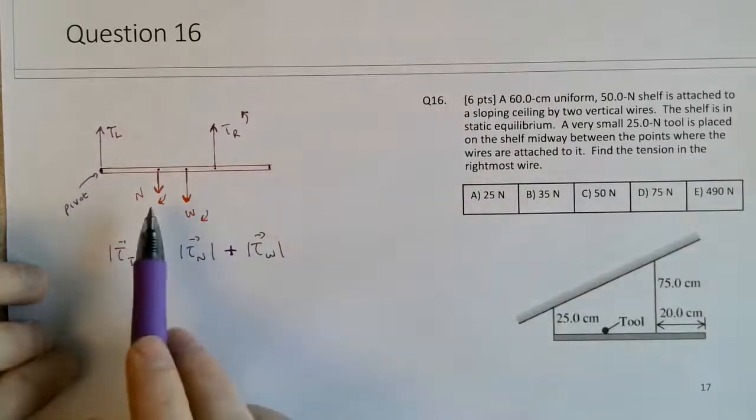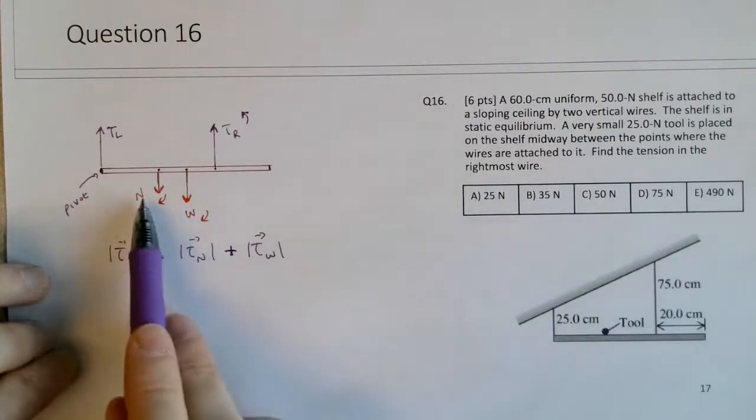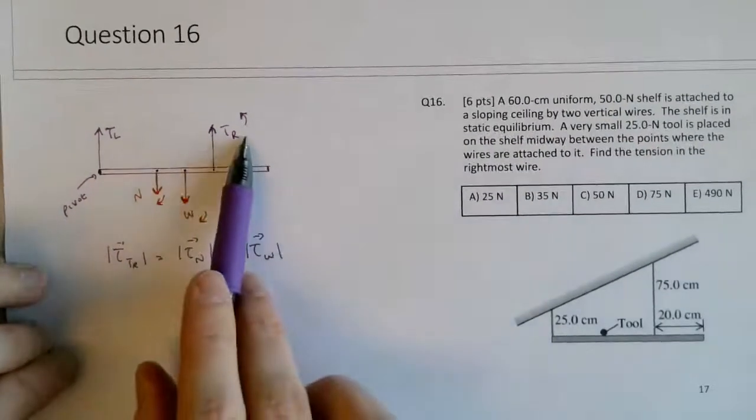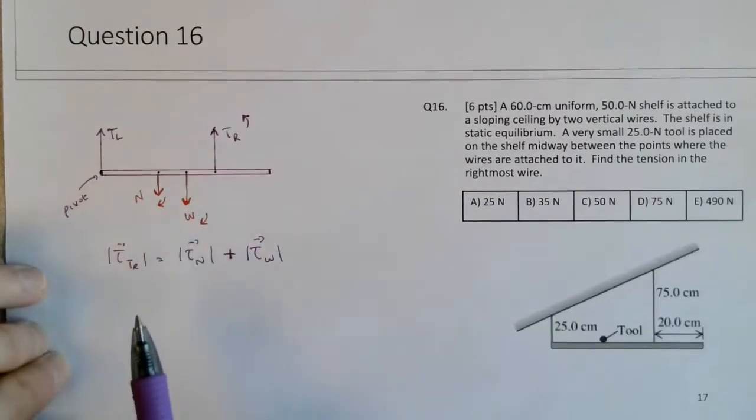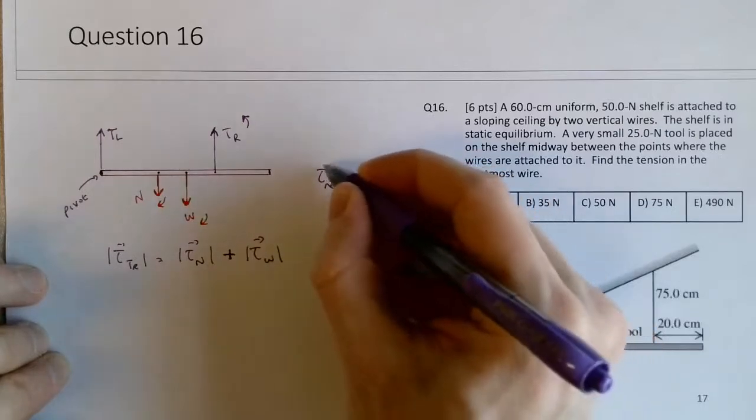And then I'm not going to worry about the negative torques due to the normal weight and the positive torque. So I'm setting the magnitudes of the counterclockwise equal to the magnitudes of the clockwise, such that the total sum in net torque is equal to zero.